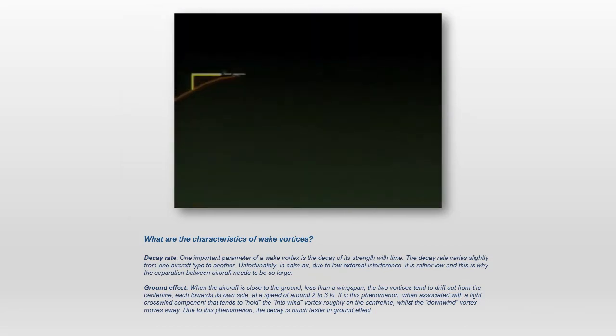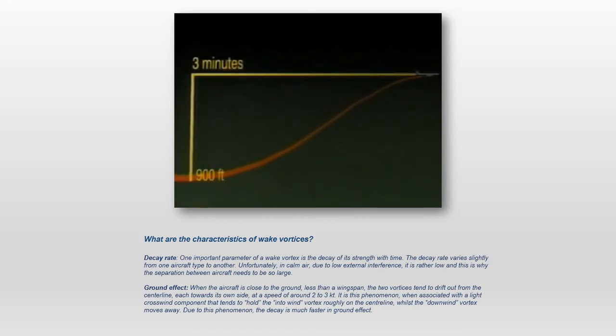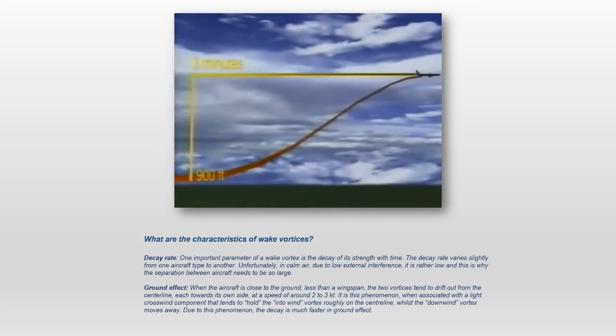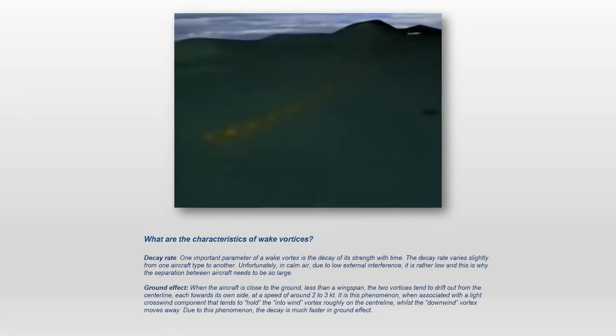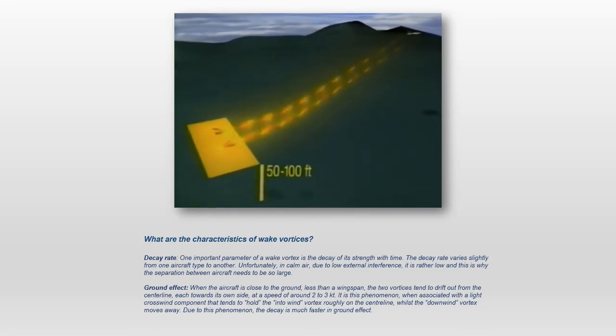The vortices from larger aircraft sink initially at about 300 to 500 feet per minute, to a maximum of 900 feet below the flight path of the generating aircraft. Vortex strength diminishes with time and is affected by atmospheric conditions and contact with the ground. In calm wind, as the vortices sink close to the ground, they tend to move laterally over the ground at approximately 2 to 5 knots.